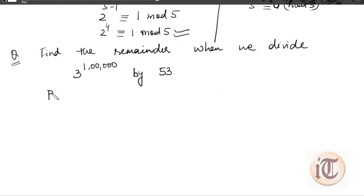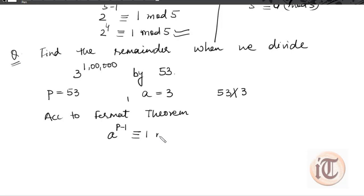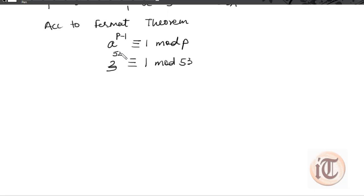We take p as 53, which is a prime number, and a as 3. Since 3 is not divisible by 53, we can apply Fermat's theorem. According to Fermat's theorem, a to the power p minus 1 is congruent to 1 mod p, so 3 to the power 52 is congruent to 1 mod 53. This means when we divide 3^52 by 53, we get a remainder of 1.